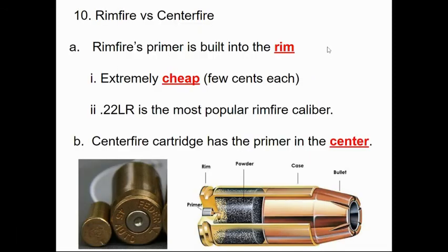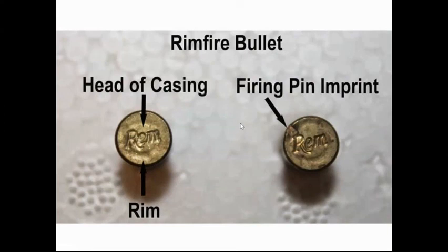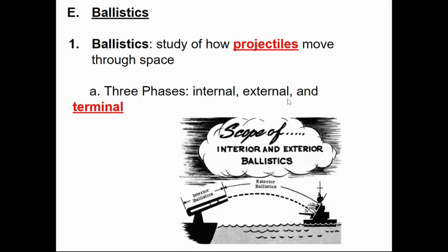Rimfire versus centerfire: rimfire has the primer built into the rim, is extremely cheap to manufacture, and the .22 long rifle is the most popular rimfire caliber. Centerfire strikes the primer in the middle. Looking at the picture, the .45 Auto from Federal shows a silver-colored primer in the center with an indentation where the firing pin struck — that's a spent shell casing. The rimfire example shows the indentation on the rim. The head stamp 'REM' stands for Remington. That brings us to ballistics, which we will cover in a future section.